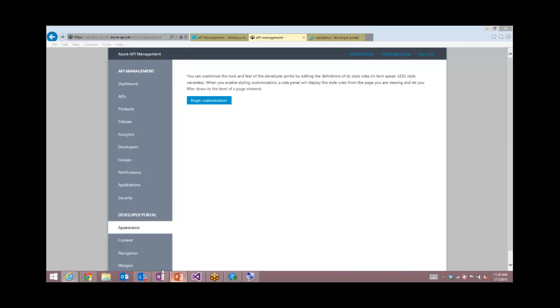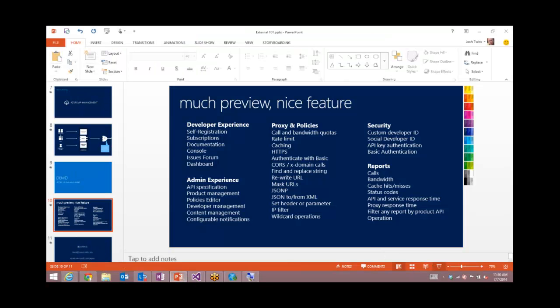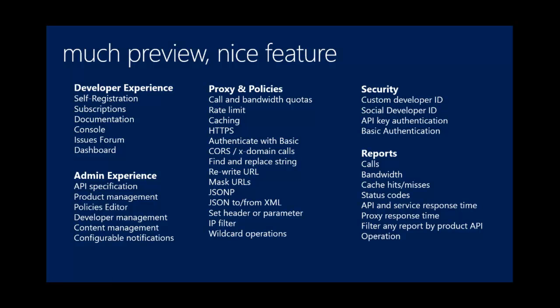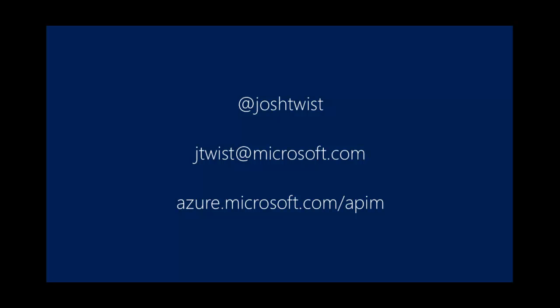These are the features that we have in preview right now — a nice big list of features. I'll send this deck over to Michael to distribute out to people who are able to join the call. We have some new features coming along very soon, including OAuth support, mutual certificate support for connecting to the backend, and a full management API coming very soon. I'd love to hear feedback from you guys in terms of features you'd like to see. You can follow me on Twitter at Josh Twist, email me at jtwist@microsoft.com, and find all of our documentation at azure.microsoft.com/apim.